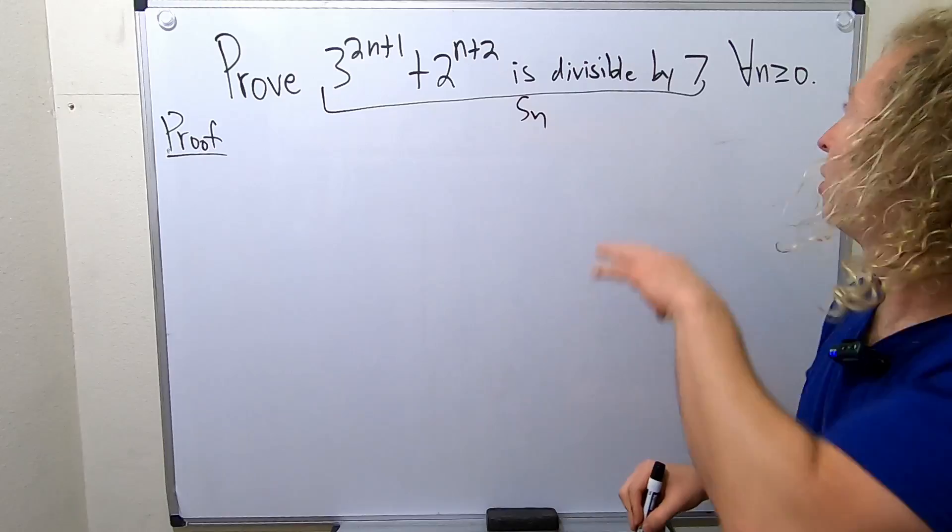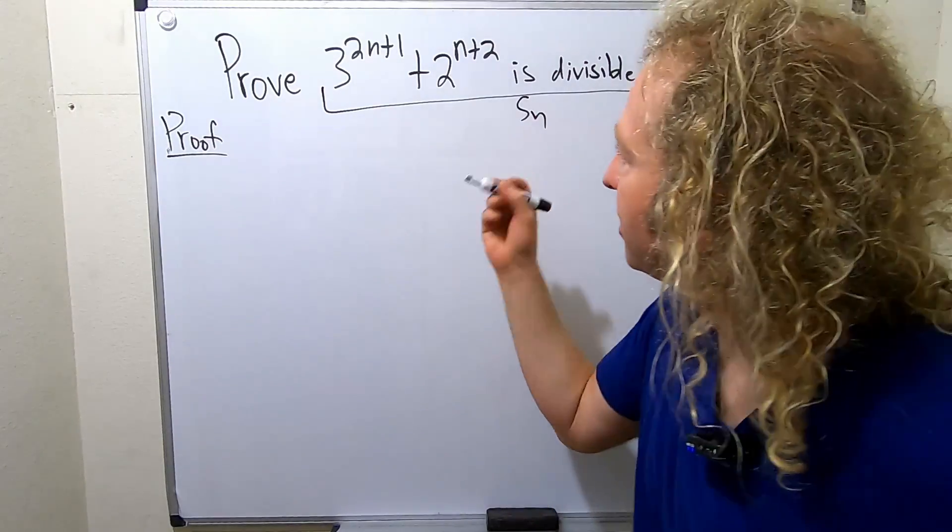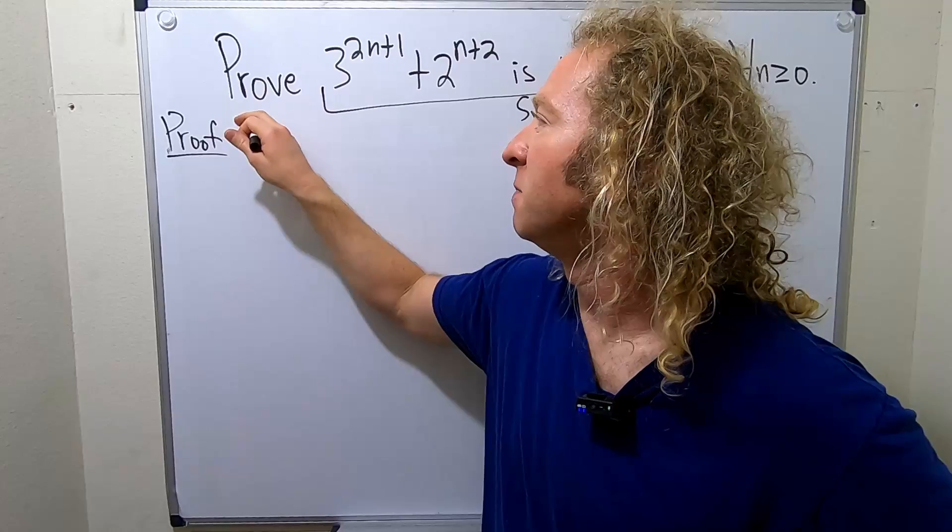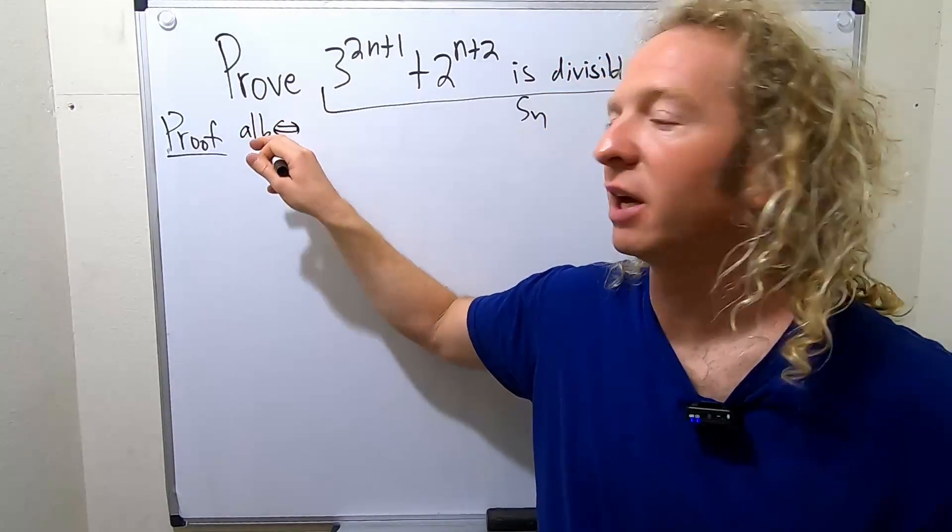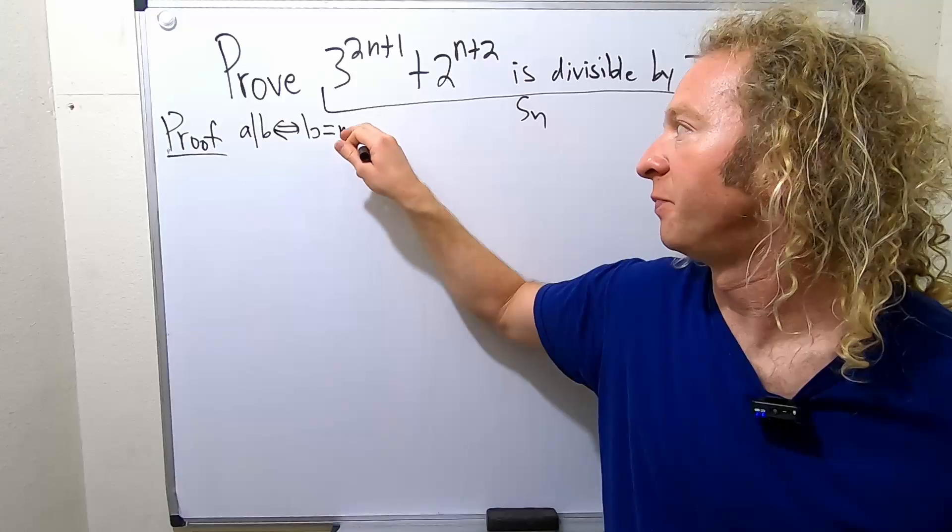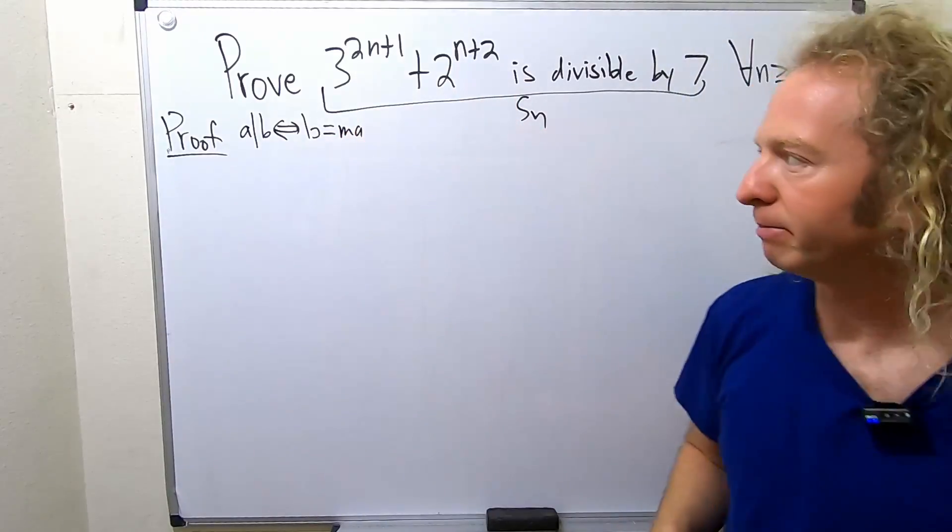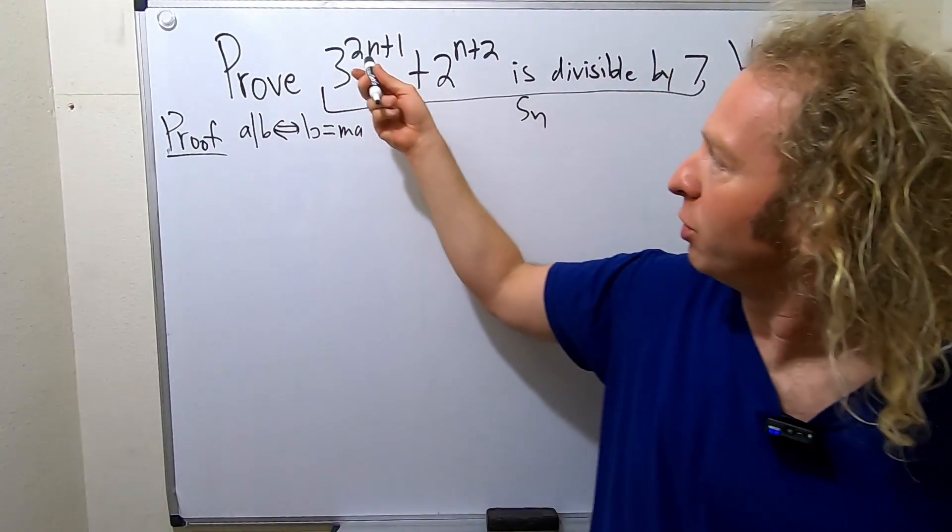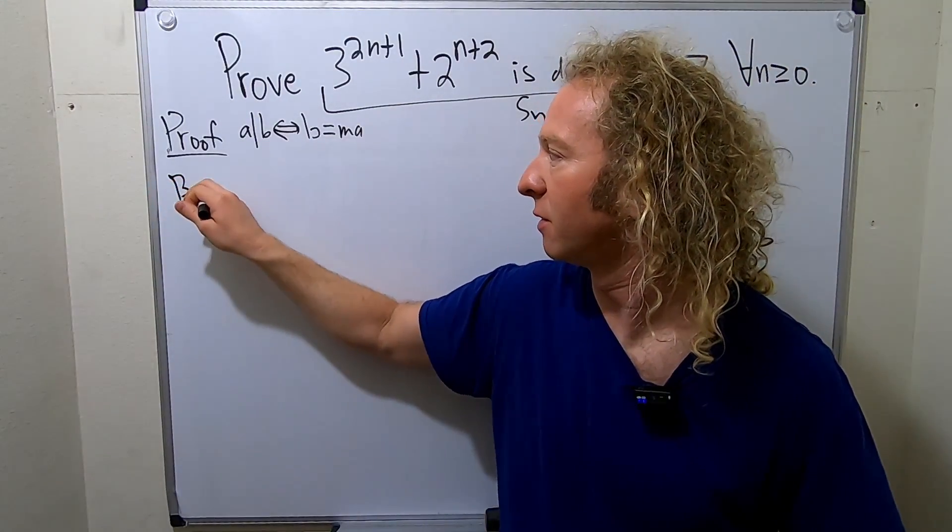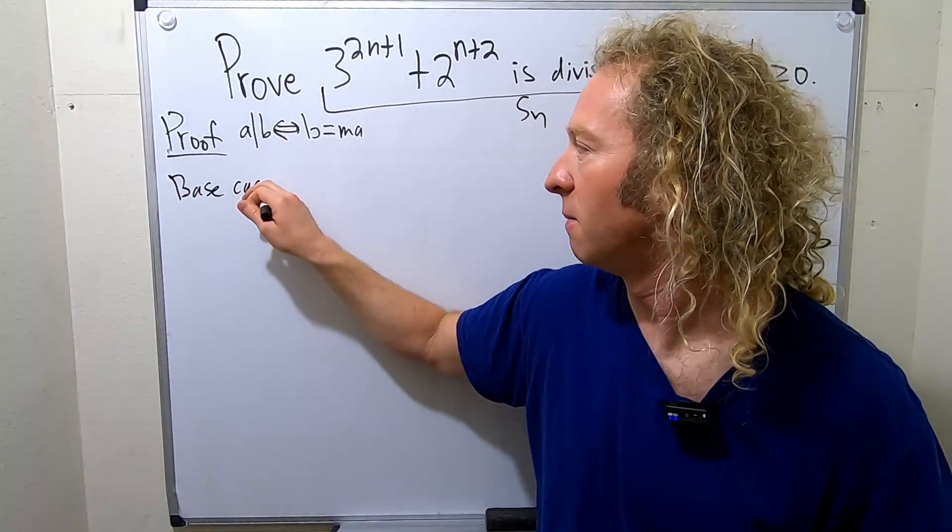To prove that this is true when n is equal to 0. So let's see if it's true. By the way, what does it mean to be divisible? a divides b is equivalent to saying that b is a multiple of a, so b is equal to m times a for some integer m. So here, we start by plugging in 0. So base case, when n is 0.